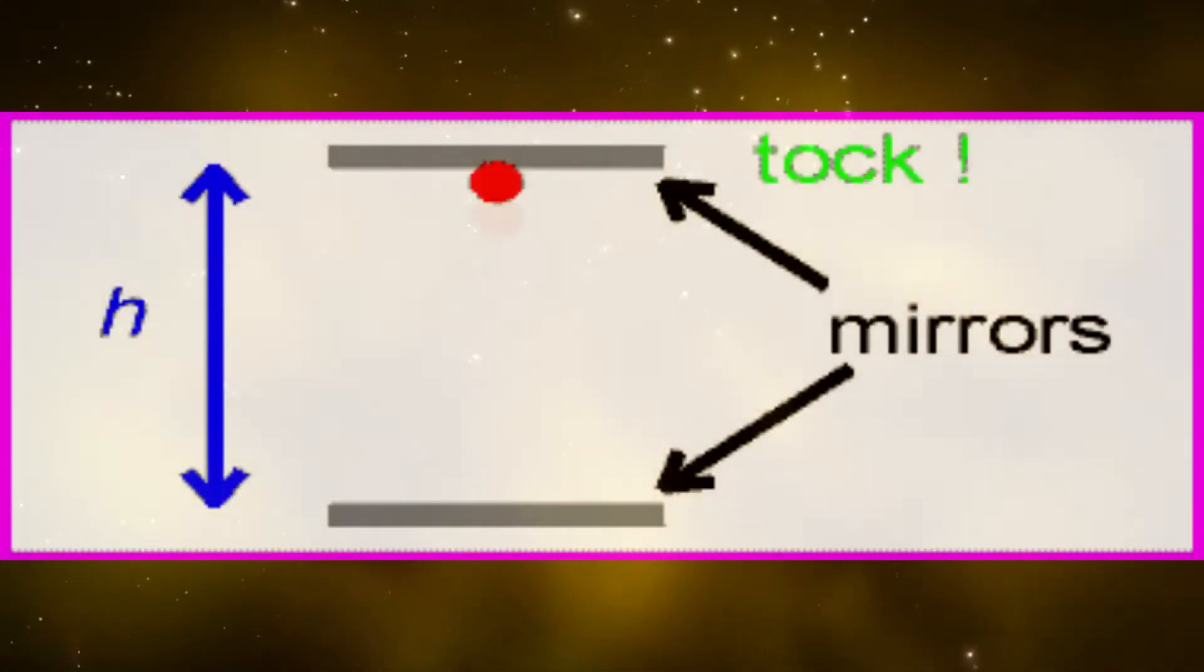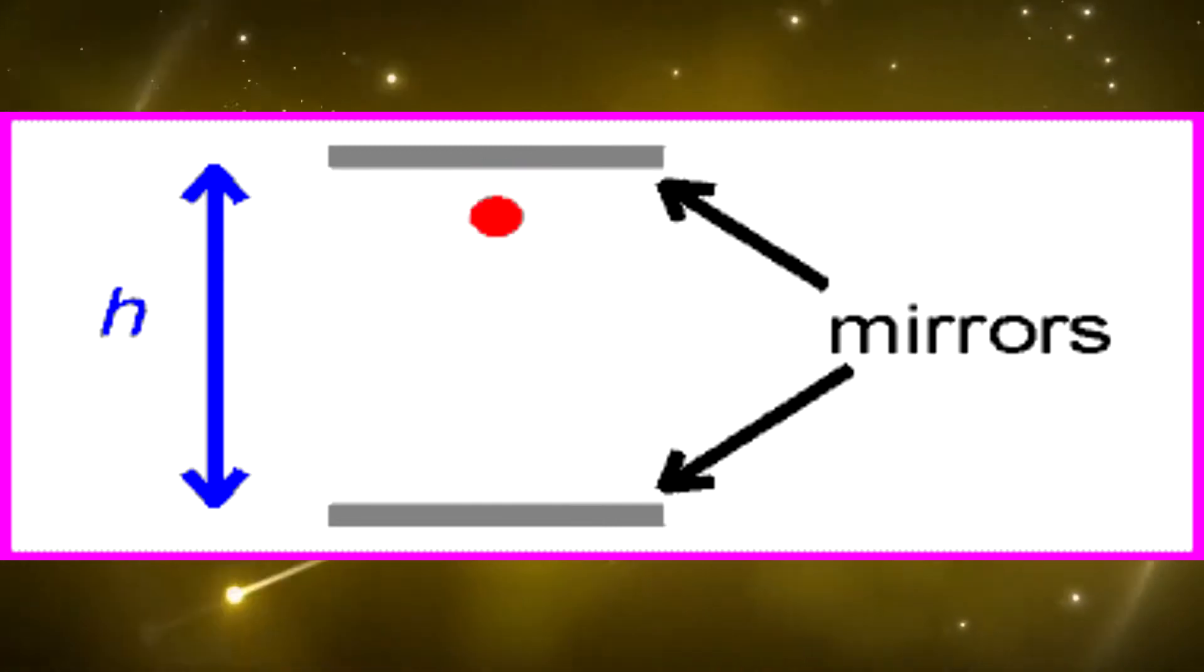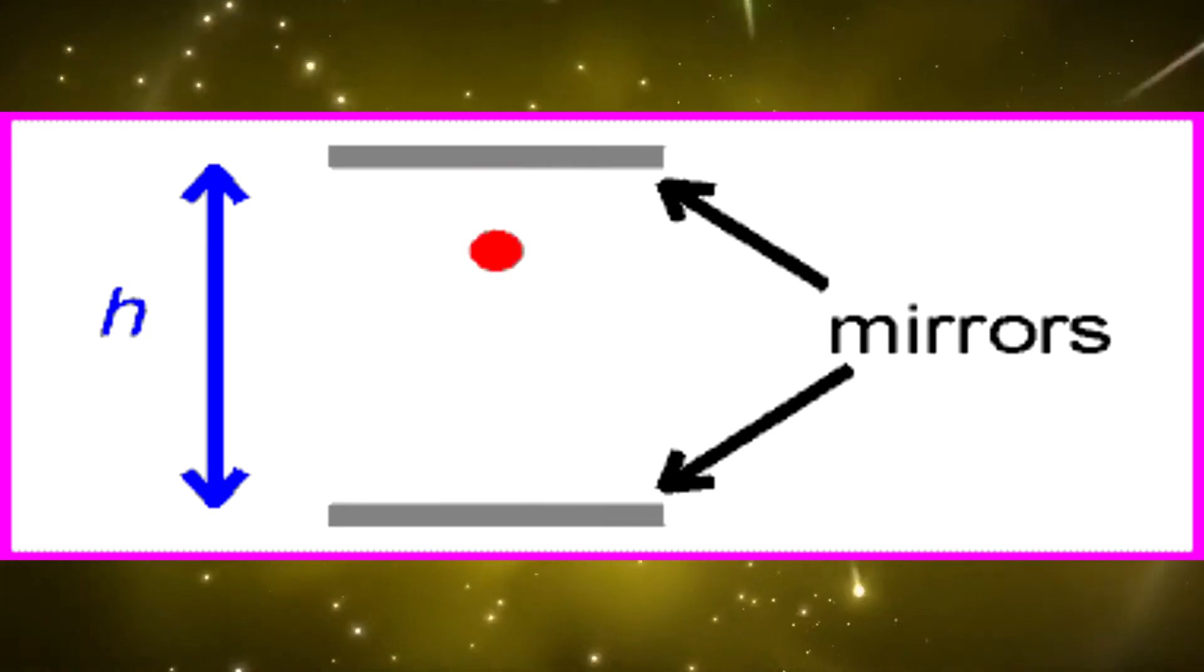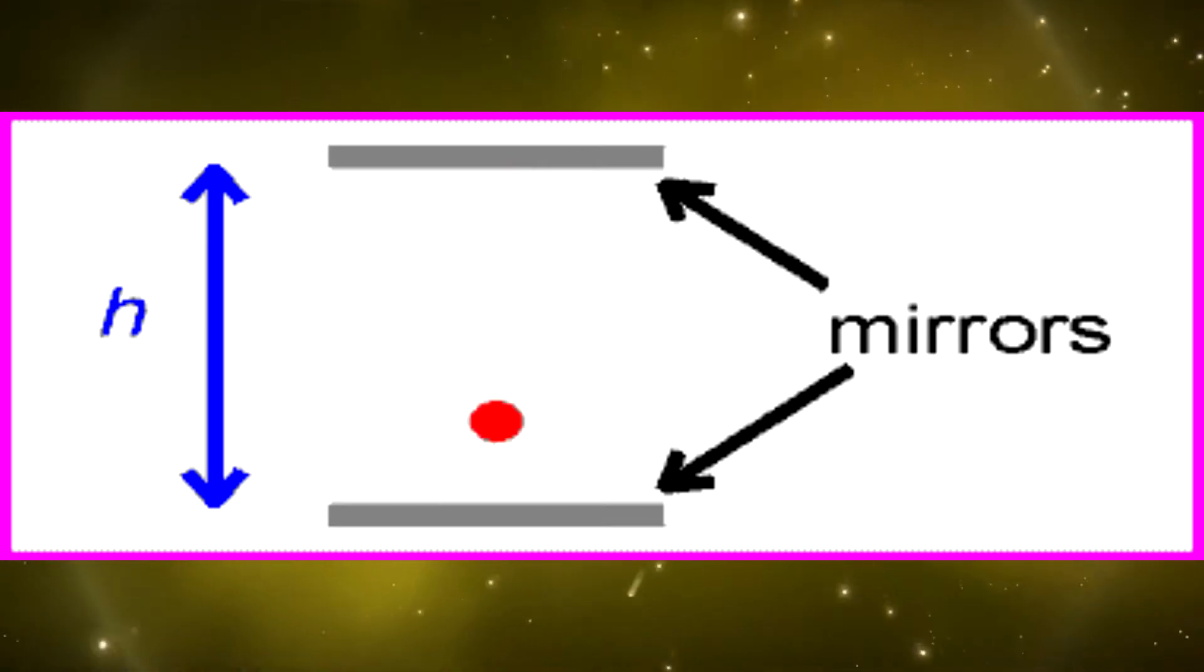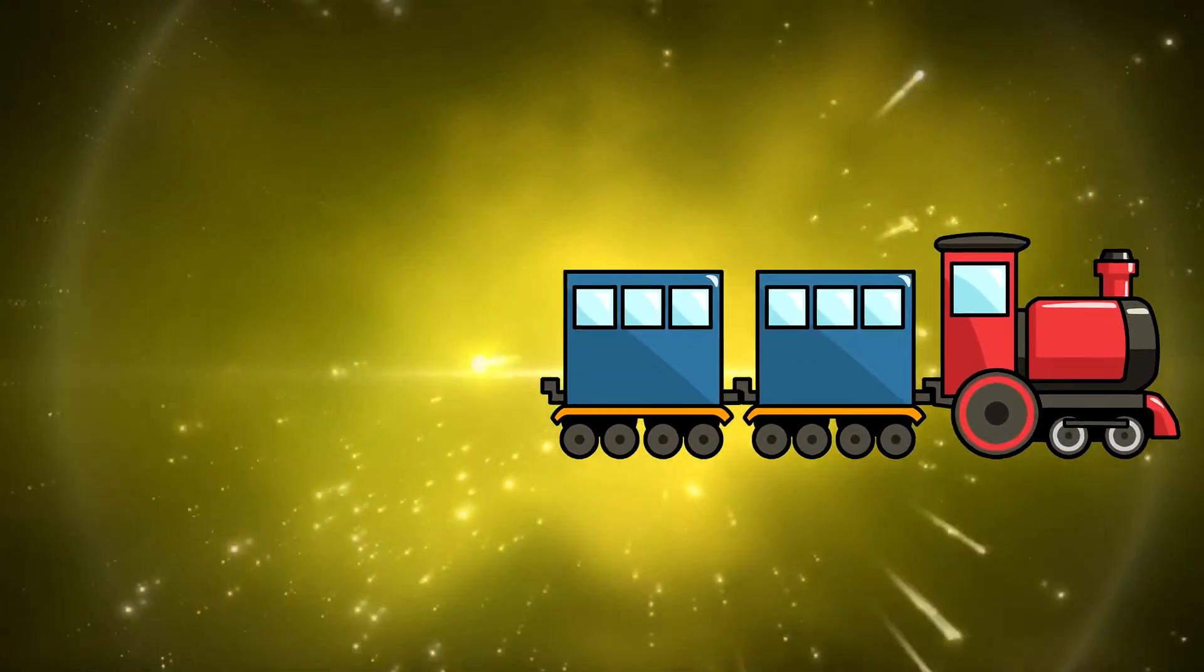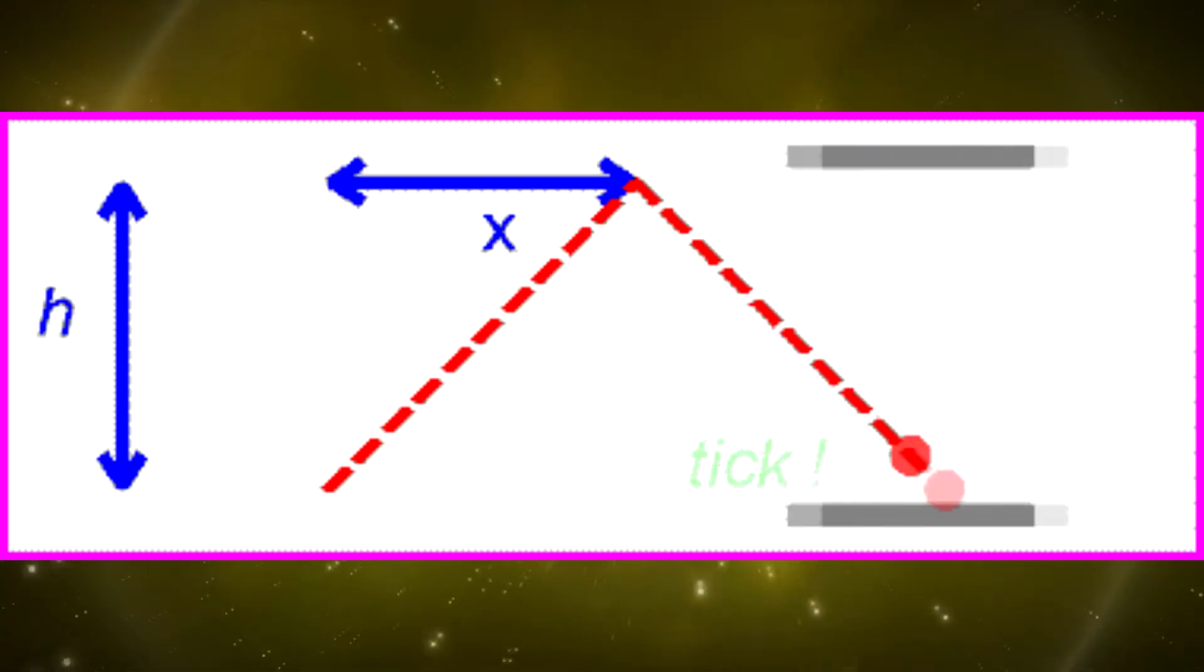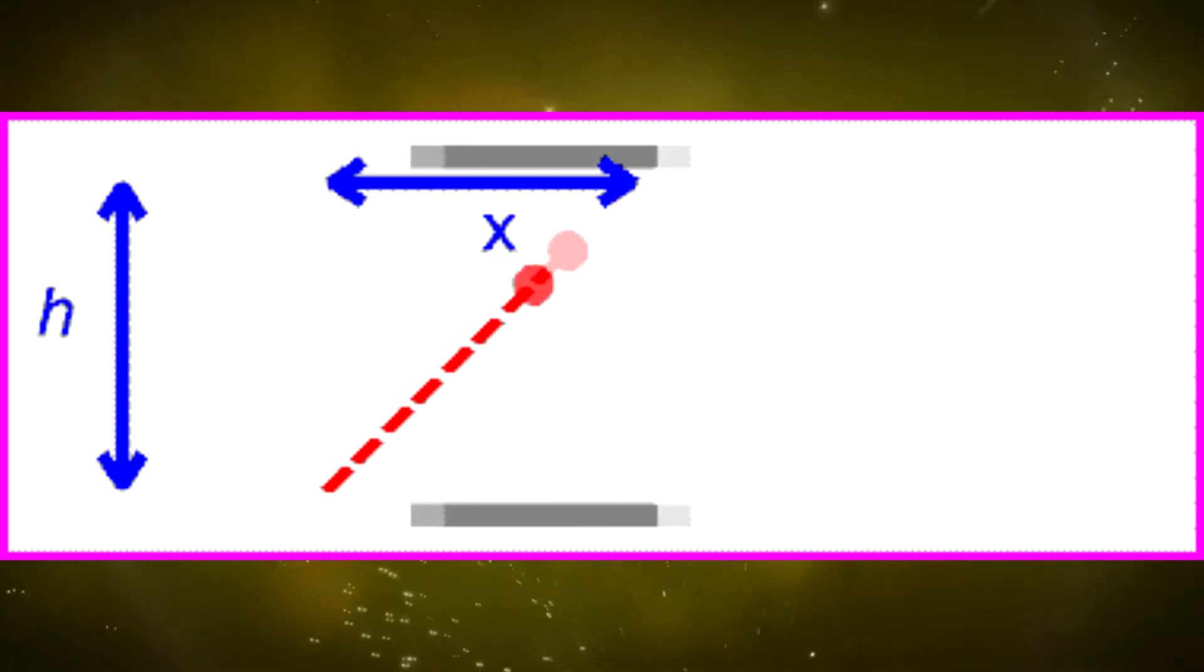So imagine a clock device set up with two mirrors and a particle of light bouncing between them. This particle of light has to travel a certain distance h before bouncing off each mirror. Now, take this setup and put it in a train. Imagine that the train is driving past you at a very quick speed while you're standing still on the ground. The particle of light would bounce between the two mirrors the same way as it would if it was next to you on the ground.